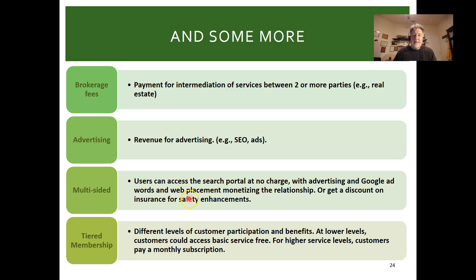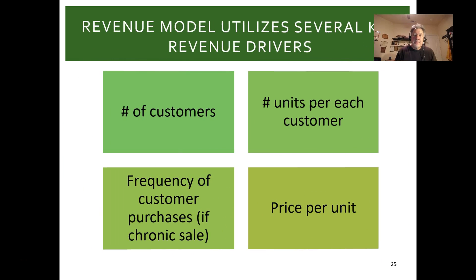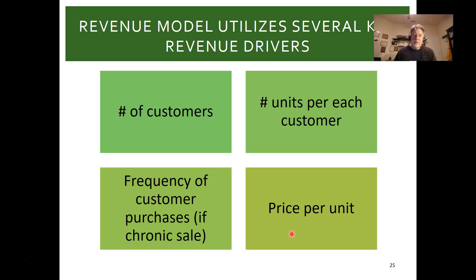Multi-sided models — like Google — have one side free and the other side paying, such as through AdWords, web placement ads, or paying for data. Tiered membership, like LinkedIn, has different levels of participation and benefits — lower levels may be free, higher service levels require a subscription, and there may be a corporate subscription tier as well.